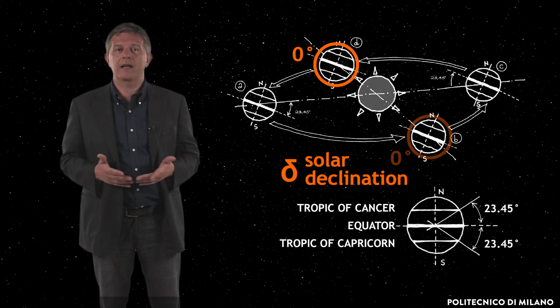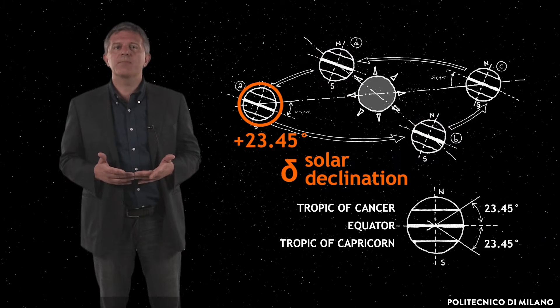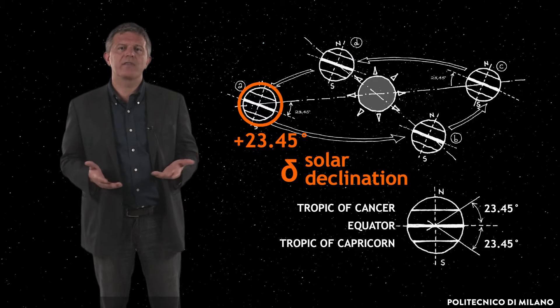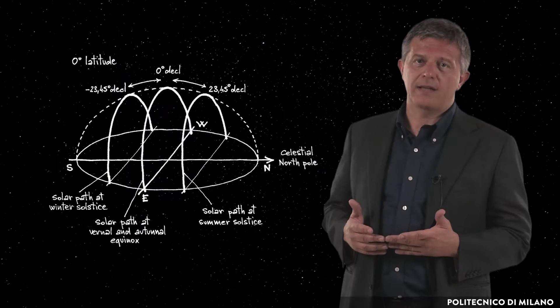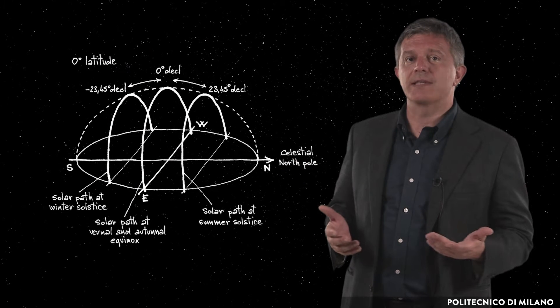It is equal to zero at the spring and autumn equinoxes, is plus 23.45 degrees at the summer solstice and minus 23.45 degrees at the winter solstice. As a consequence of the Earth's movements around the Sun,